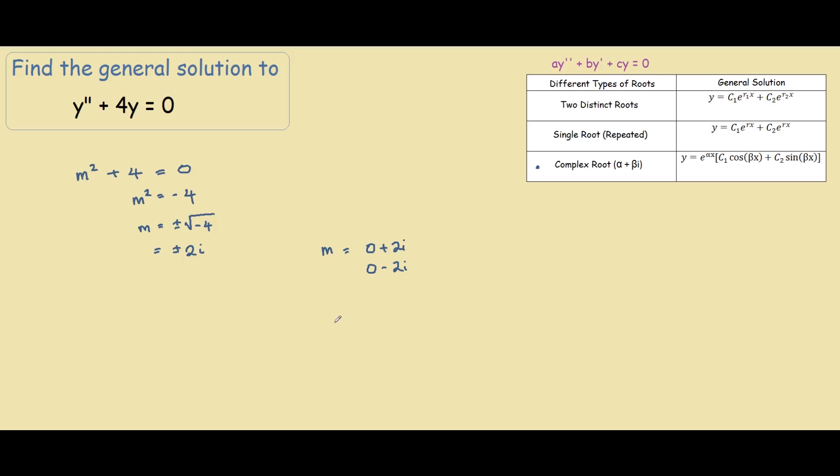So since we have complex roots, our general solution is y equals e raised to the power of αx. Our alpha in this case is 0, but I'll still write it down just to show you guys. So we have some constant, cos of beta. Beta is 2.